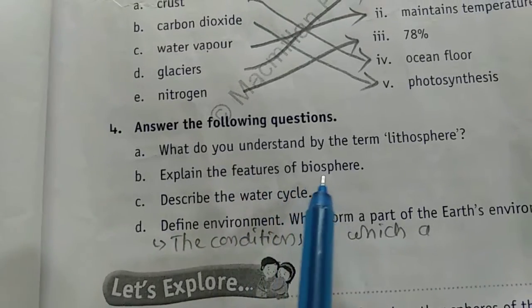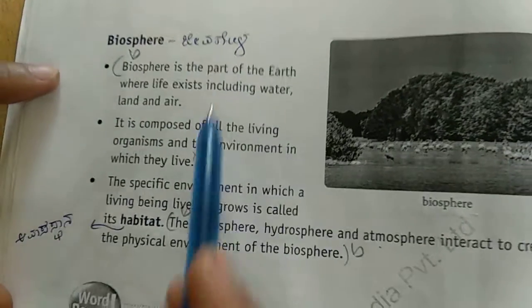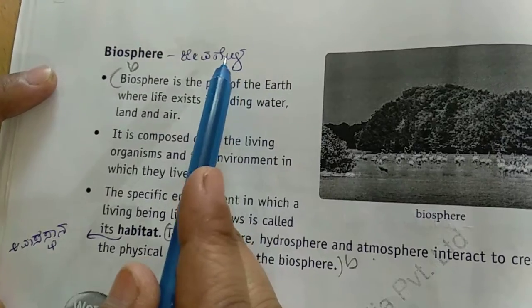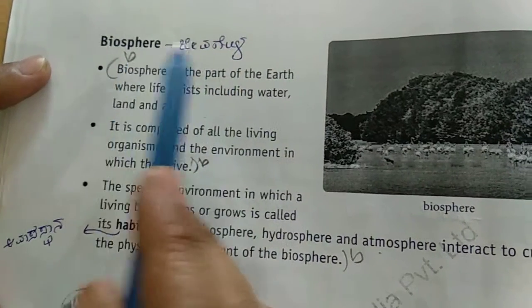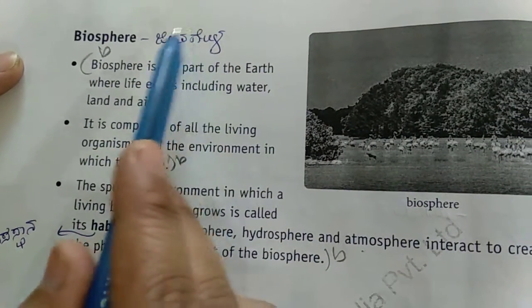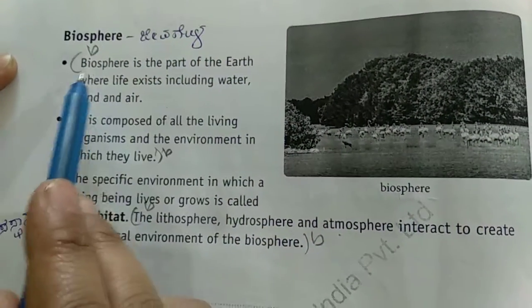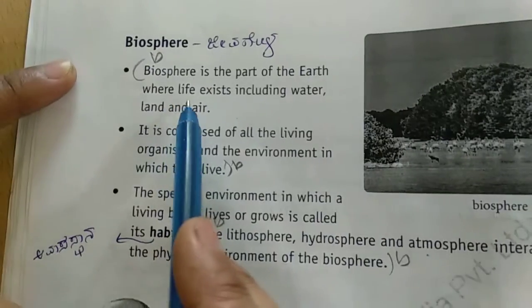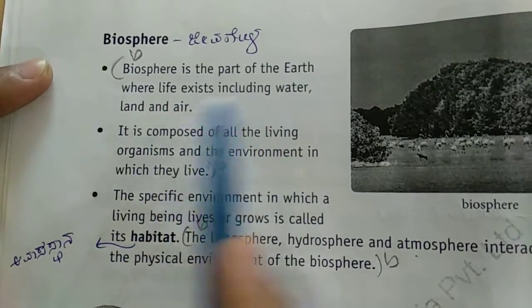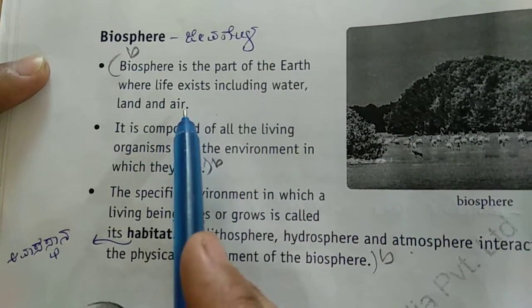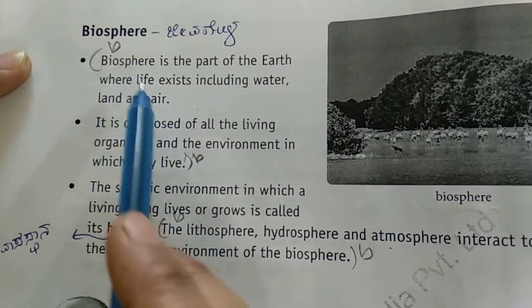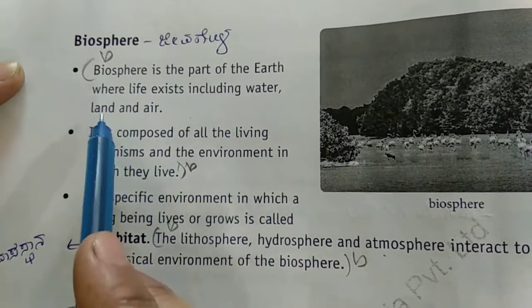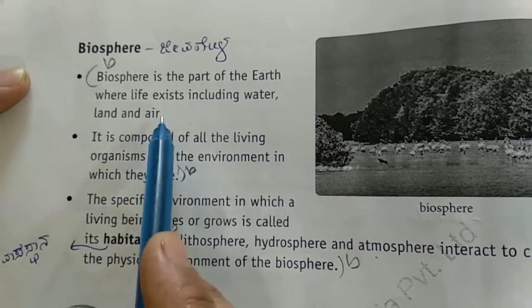B question — explain the features of biosphere. Biosphere means jeeva gola anta hedhati vi. Biosphere is the part of the earth where life exists including water, land and air. Jeeva gola dhalla e'en anta niratthandre — niru, bhoomi matthu gali iratthet.